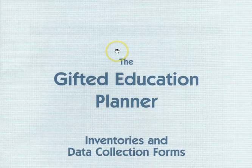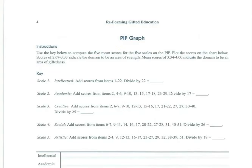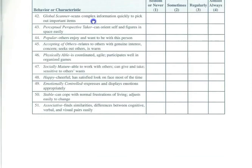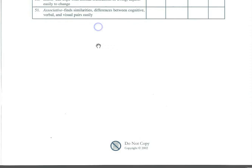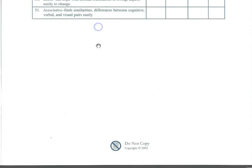One thing I want to caution you on is the hard copy of the actual packet for the Gifted Education Planner. On each of these forms, it will tell you on the very bottom of the form itself that you are not allowed to copy them. So be very aware of this. It is perfectly fine to make your own form with the questions to give to a parent, teacher, or student, and then once you collect those back, you can put them into a hard copy planner so that you have it all in one place.